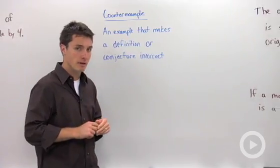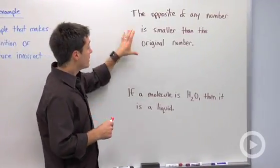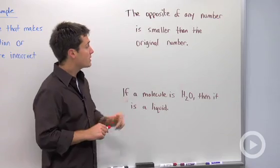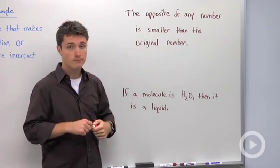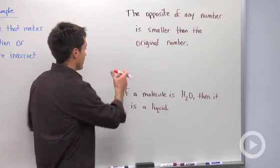So let's look at a couple examples and see if we can find a counterexample. The opposite of any number is smaller than the original number. So I guess we could say pick an original number.